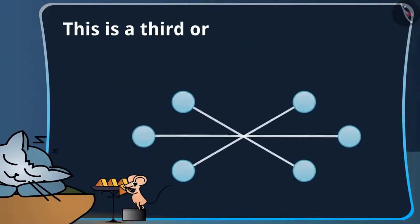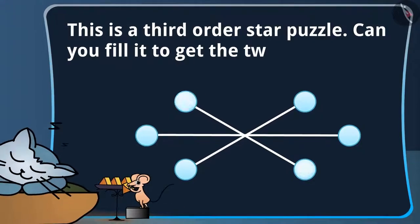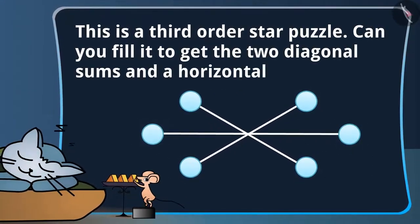This is a 3rd order Star Puzzle. Can you fill it to get the 2 diagonal sums and a horizontal sum equal?